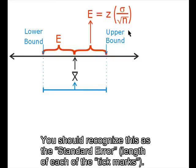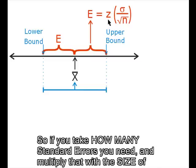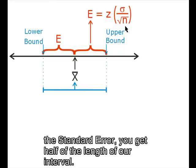You should recognize this as the standard error, the length of each of the tick marks. So if you take how many standard errors you need and multiply that with the size of the standard error, you get half of the length of the interval.